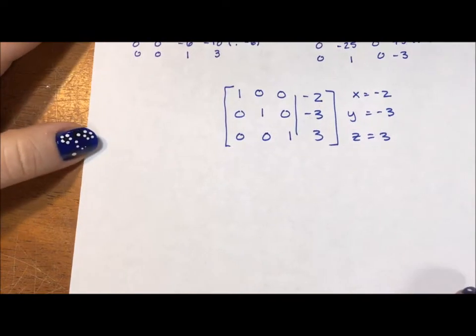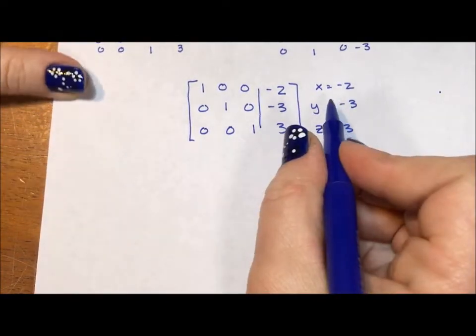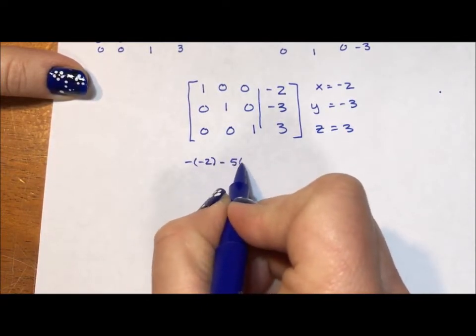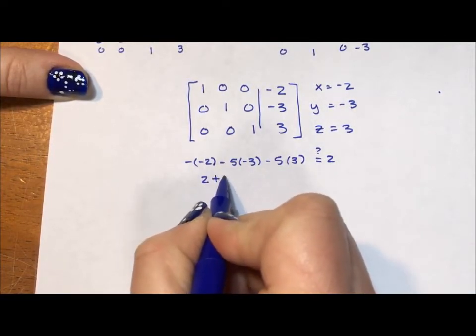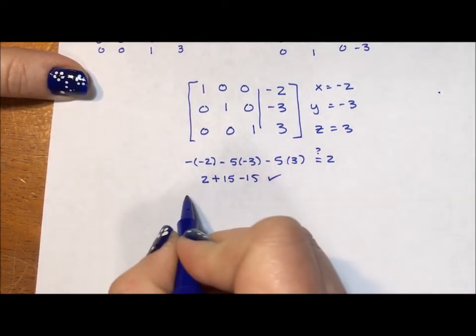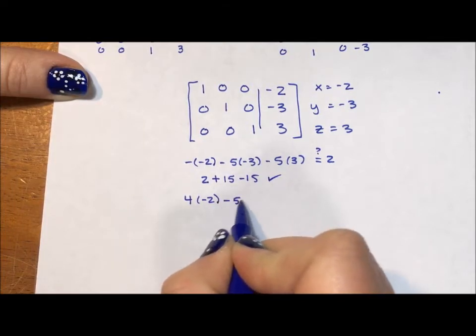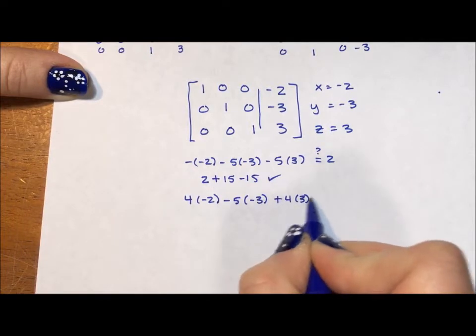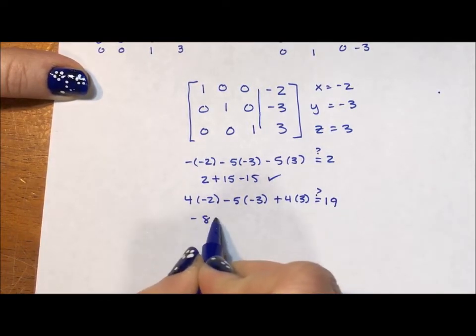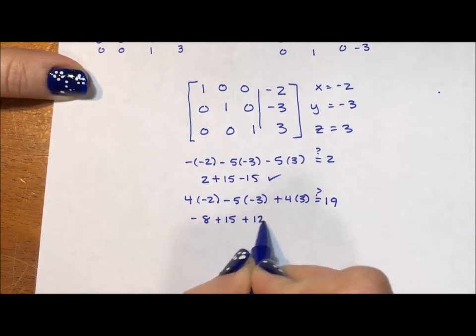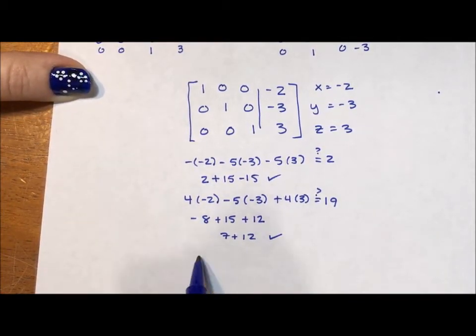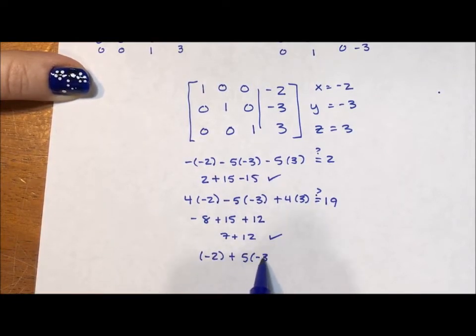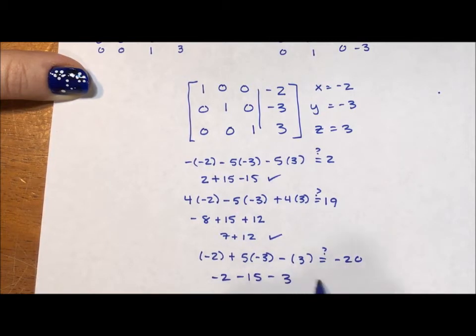Let's check this to make sure it all works out. Is -(-2) - 5(-3) - 5(3) really equal to 2? 2 + 15 - 15, yes. Is 4(-2) - 5(-3) + 4(3) really equal to 19? We have -8 + 15 + 12. That's 7 + 12, so yep. Last is -2 + 5(-3) - 3 equal to -20? -2 - 15 - 3, yes.